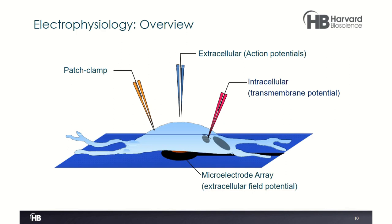To illustrate the different techniques: with patch clamp, the glass pipette goes directly up to the cell membrane, removing a small section and characterizing channels. With the microelectrode array, the electrodes are positioned underneath the cardiomyocytes, recording extracellularly — similar to an extracellular electrode — and what you obtain are field potentials.